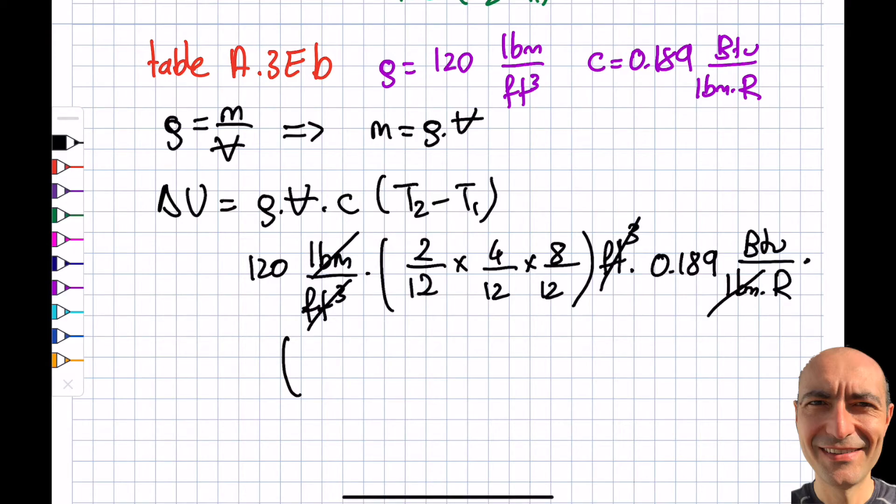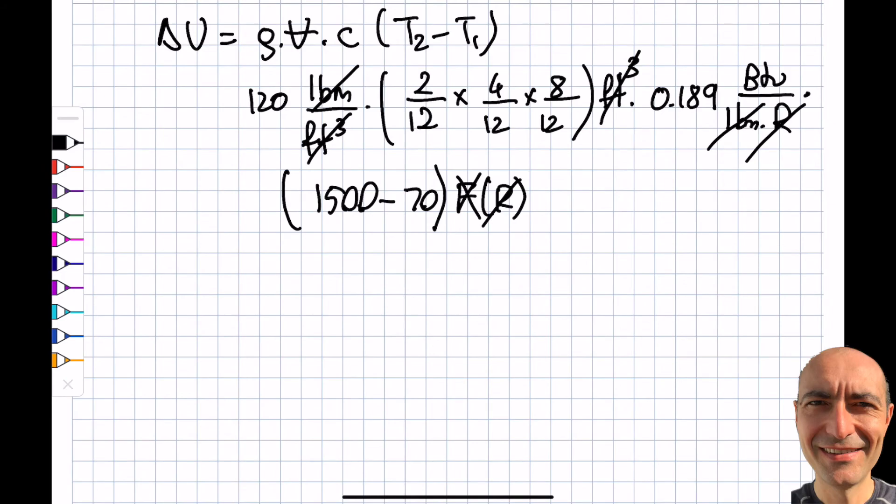And then I'm going to multiply this by T2 minus T1. Can I simply write 1500 minus 70? Would that be a mistake? Because it's Fahrenheit. How am I going to cancel this and that? Should I convert this to Rankine? No, I don't have to. Remember, the delta of Rankine is also equal to delta Fahrenheit. Individual not, but Fahrenheit and Rankine, they are the same. So you can get rid of this. You can see, I get myself BTU. And the rest is putting into the calculator. And you get yourself something like 1,200 BTU per brick. So one brick has this much.